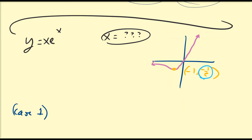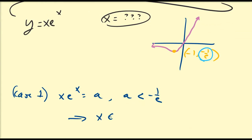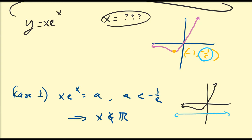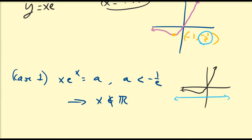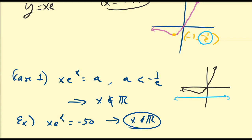Case 1: suppose x·e^x = a where a < −1/e. In this case there is no solution in the real numbers, because the horizontal line y = a lies below the minimum of the curve. For example, if we try to solve x·e^x = −50, since −50 < −1/e, there is no real solution. You could investigate complex solutions, but that's beyond our current focus.